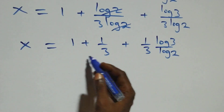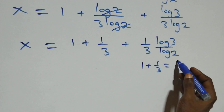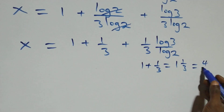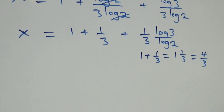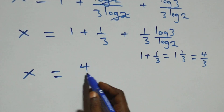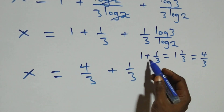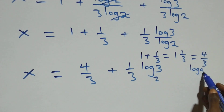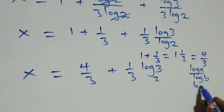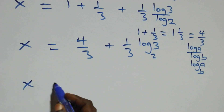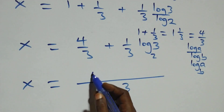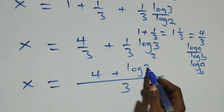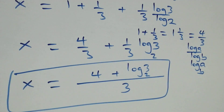The log 2 terms cancel, leaving 1 over 3, so x equals 1 plus 1 over 3 plus log 3 over 3 log 2. Now 1 plus 1 over 3 equals 4 over 3. So x equals 4 over 3 plus 1 over 3 times log 3 over log 2. Applying the change of base formula, log 3 over log 2 is log 3 base 2. Combining as one fraction, x equals 4 plus log 3 base 2, all over 3.